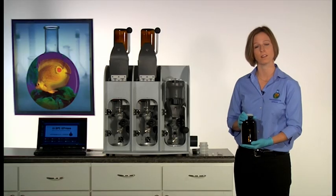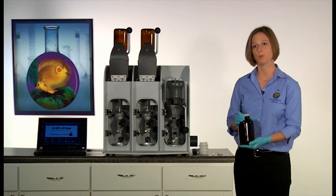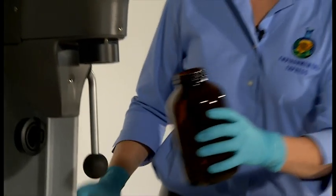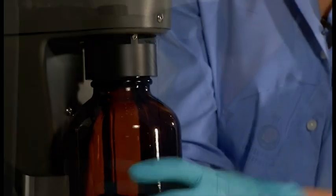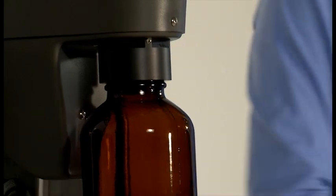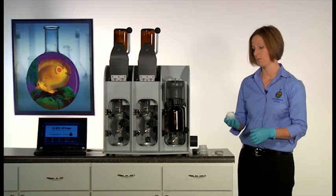Start by loading your 1 liter acidified sample simply by screwing the sample bottle directly onto the station. Next, affix a filter assembly to the station mesh side down.